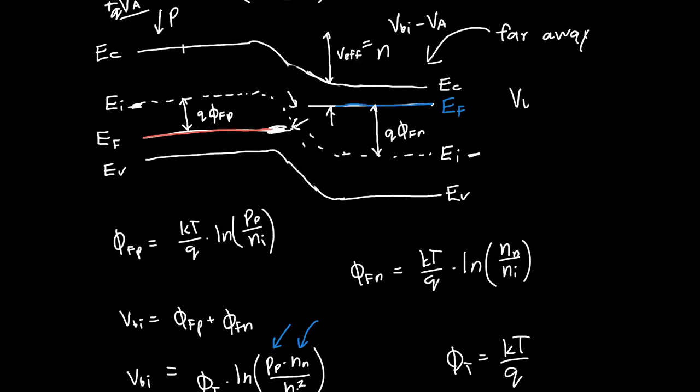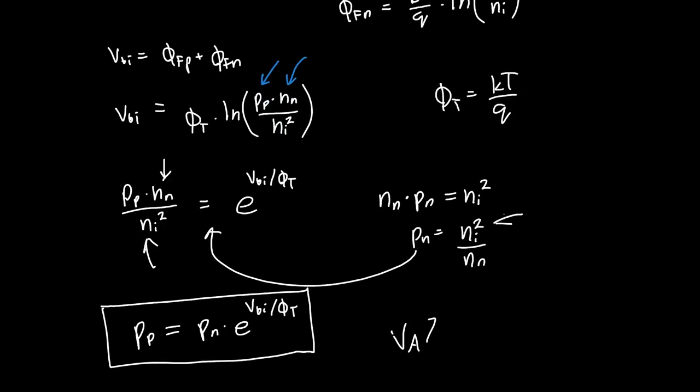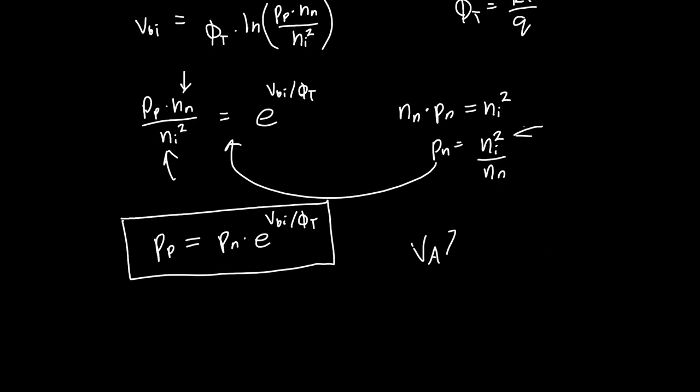And so in our old equations, anywhere we had VBI, we can just replace it with VBI minus VA because this is the new built-in potential that our electrons, or holes, are seeing. And so we can rewrite this equation a little bit. VBI minus VA over φT. And there's one more subtlety. These electron, or these hole concentrations in this case, are only the hole concentrations at the edge of the depletion region. So I'm going to write that as PP edge and PN edge.